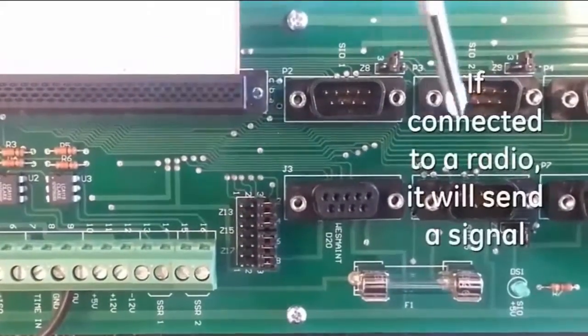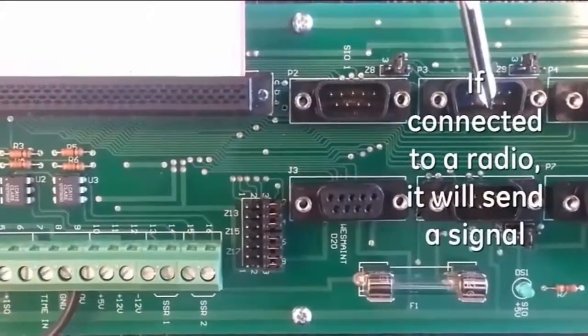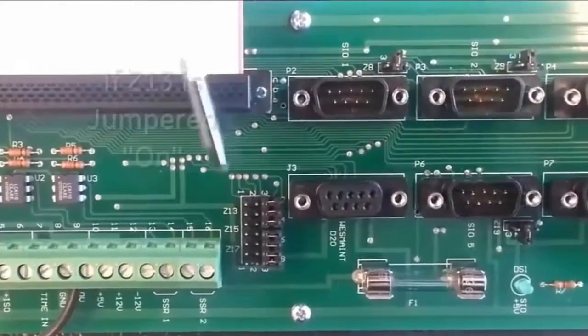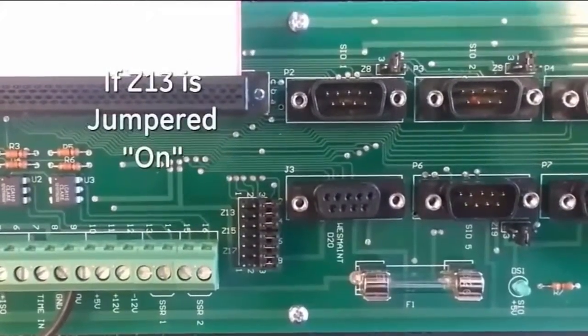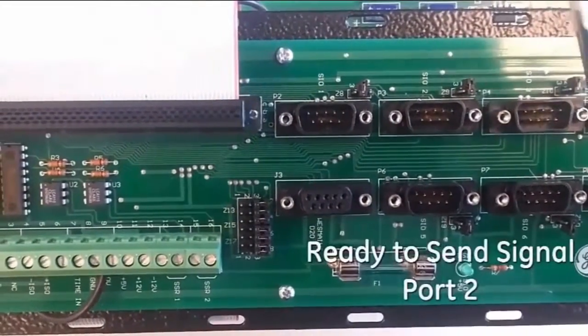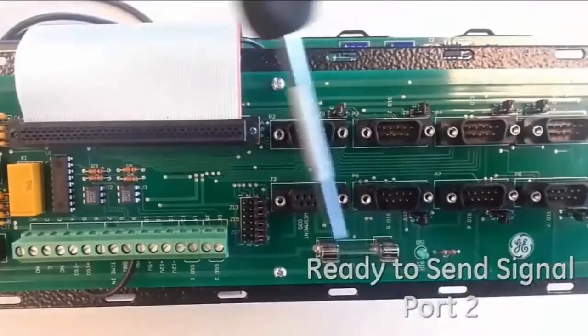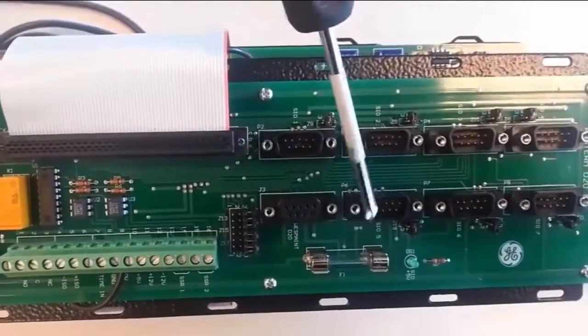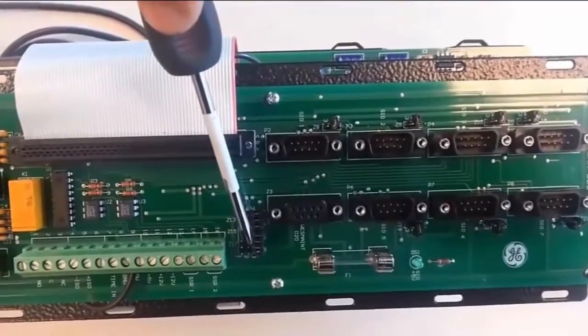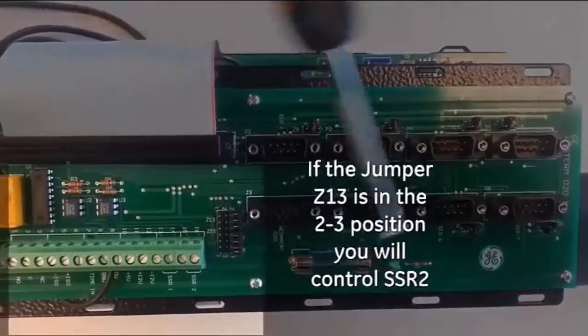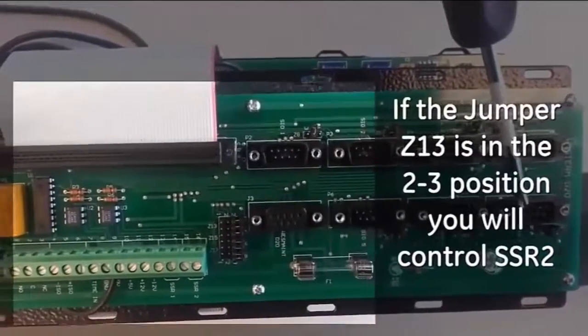Z14 is applicable to serial IO3, Z15 is applicable to serial IO4, Z16 is applicable to serial IO5, Z17 is applicable to serial IO6, and Z18 is applicable to serial IO7.